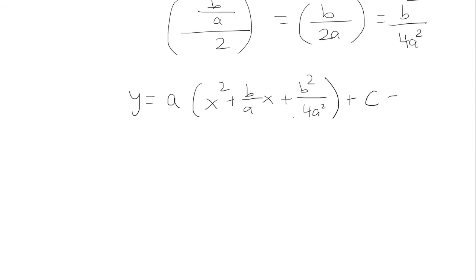So a lot of students here would say, okay, well, we added b squared over 4a squared. But the truth is, the b squared over 4a squared is being multiplied by the a. So really, we added a times b squared over 4a squared. So that's b squared over 4a.